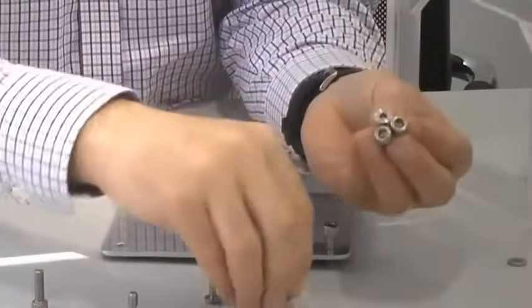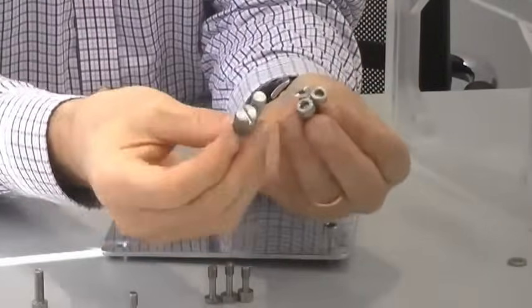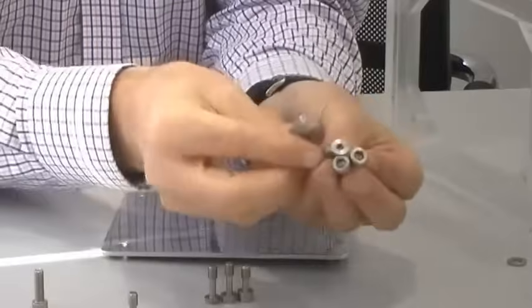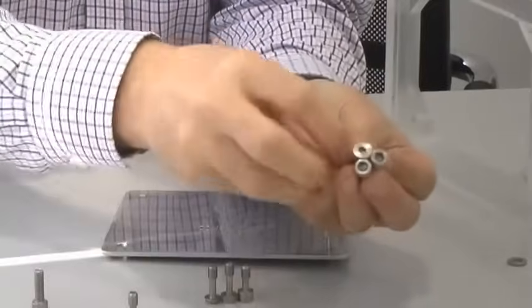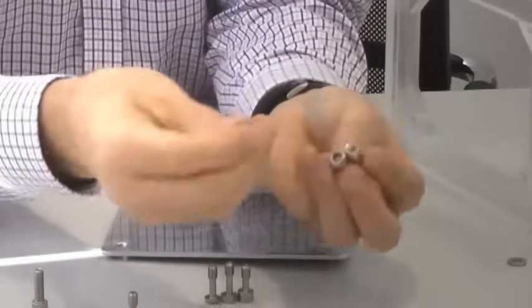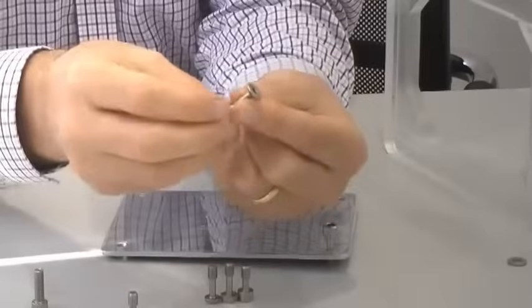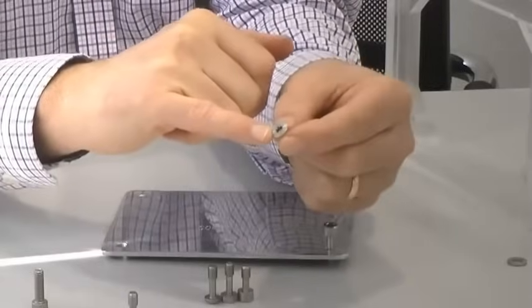We have different types of captive screws. These are captive thumb screws. These are captive screws that have got a countersunk, so basically they will recess into the panel, and this one has a Torx drive.